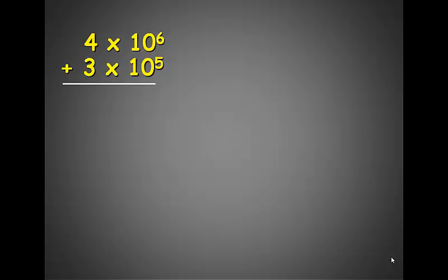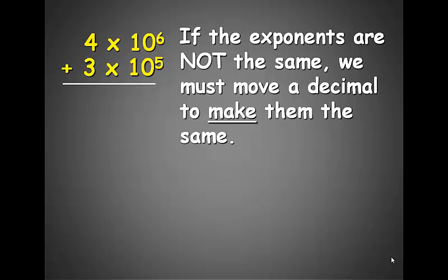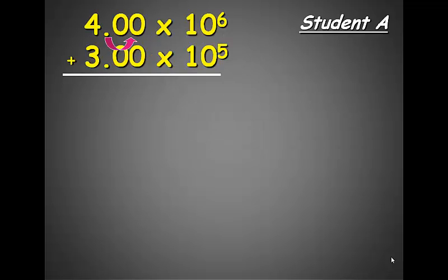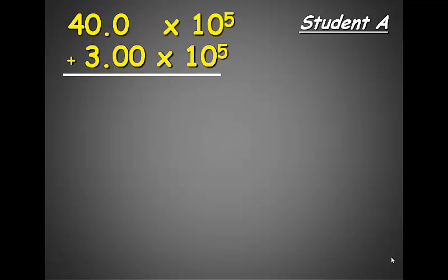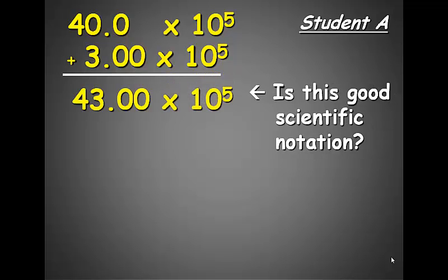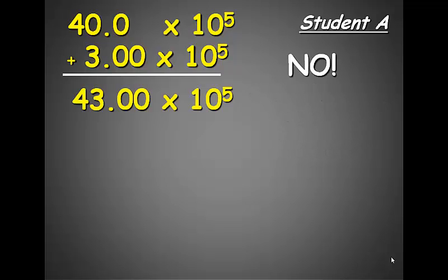What if the exponents are not the same? The first thing that we have to do is move the decimal point to make them the same. If we move the decimal point over to the right, then we reduce the exponent by 1. Now the exponents are the same, and we can add them together. 43.00 times 10 to the 5th. Is that good scientific notation? No. Remember, the m, or the 43, has to be a number that's greater than 1 or less than 10.